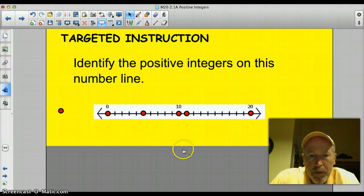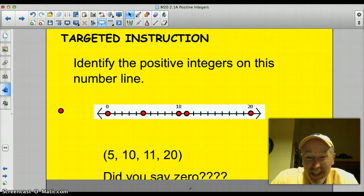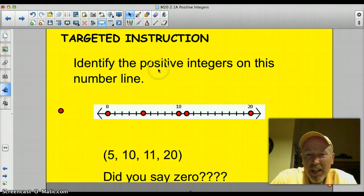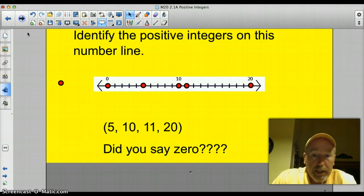I'm back. Well, if you answered the question correctly, you would have said it's numbers 5, 10, 11, and 20. Did you say zero? If you did, I caught you because zero is not a positive integer. It's neutral. So you've got to watch the way the question is worded there. Alright. Let's move on to the next slide.